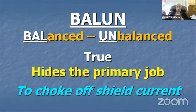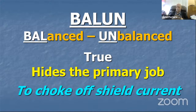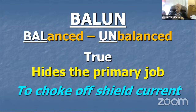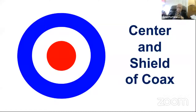We all know the term balun comes from balanced/unbalanced. But to me, the very term hides the primary job, which is stated in italics: the primary job of all baluns is to choke off shield current — outside shield current, or as we sometimes call it, common mode current — and to keep the current inside the coax. Whether it's a 4:1, 9:1, or 1:1, that's what it's meant to do.